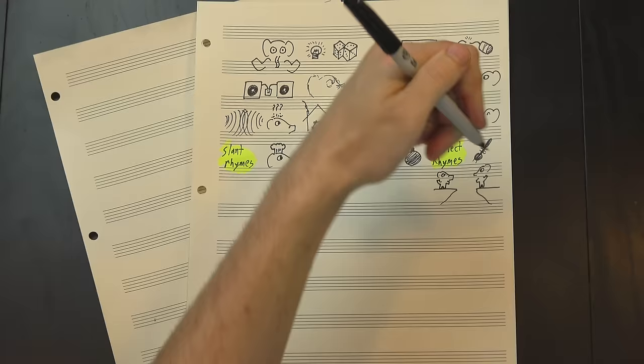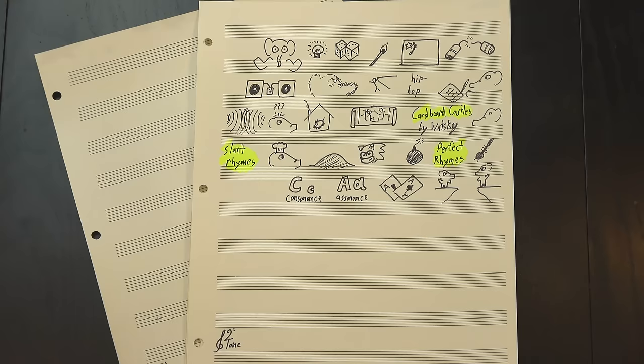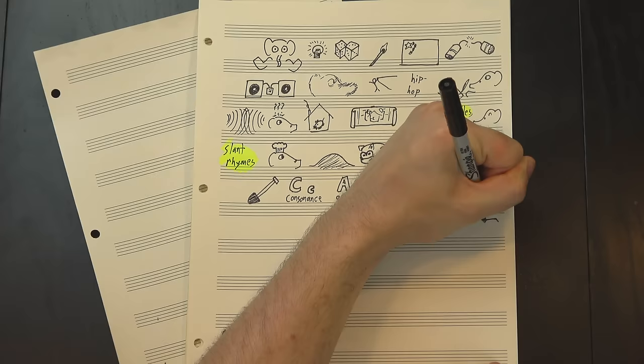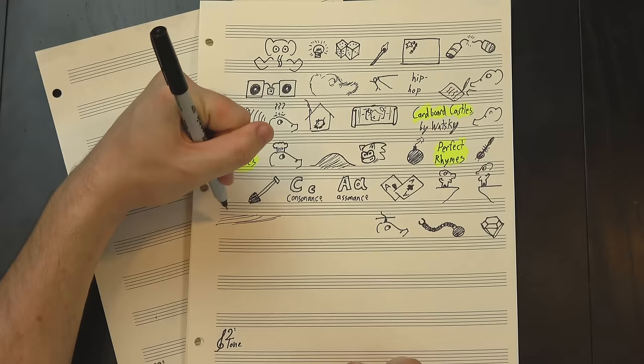This brings us to what are called slant rhymes, where the words are kinda similar but not quite as close. We can break these into two groups: assonance, where the vowel sound is the same, and consonance, where the consonant is the same. Liberal use of these sorts of semi-rhymes, especially for internal stuff, can really help your lyrics sound deep and polished without limiting your word choices too much. You just have to be aware of it.